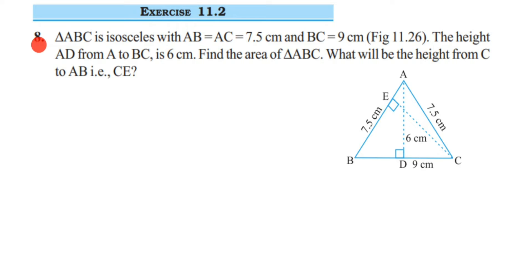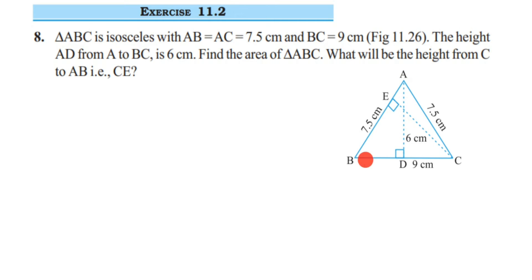The question is: triangle ABC is isosceles with AB equal to AC equal to 7.5 cm and BC is 9 cm. The height AD from A is perpendicular to BC. AD is 6 cm and BC is the base. Find the area of triangle ABC and what will be the height from C to AB.